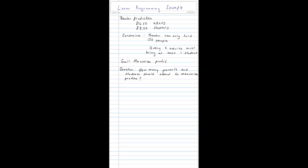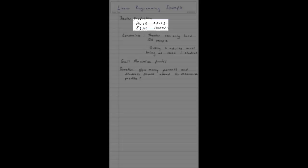Here's a linear programming example similar to those that will be asked in the homework with MyMathLab. This is a theater production. The tickets for adults are $16. The tickets for students are $8.